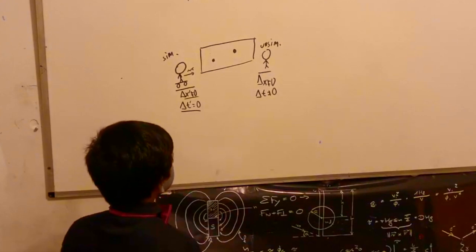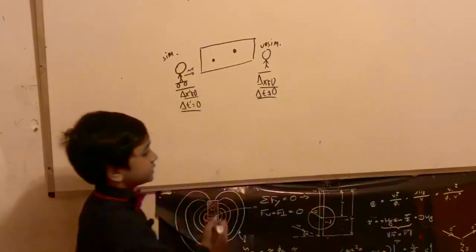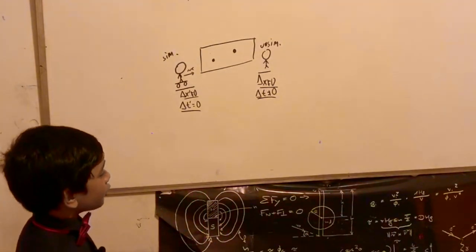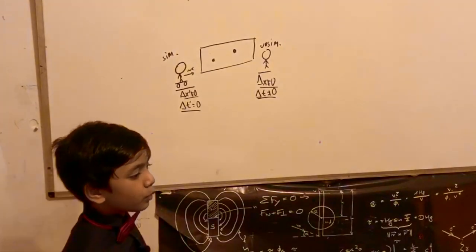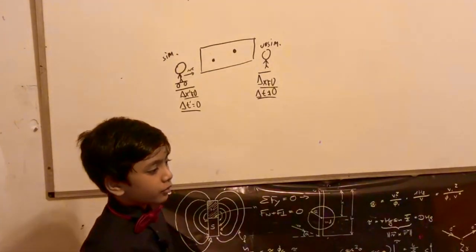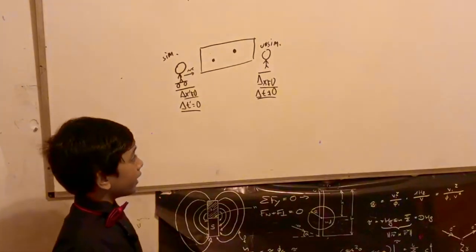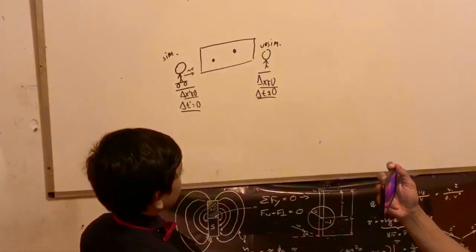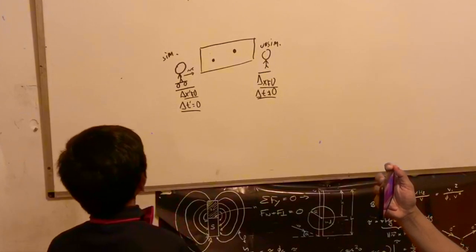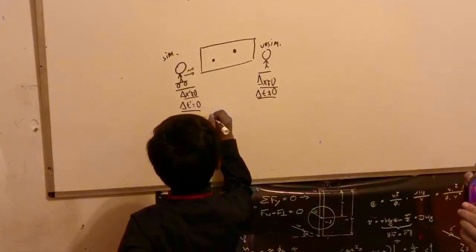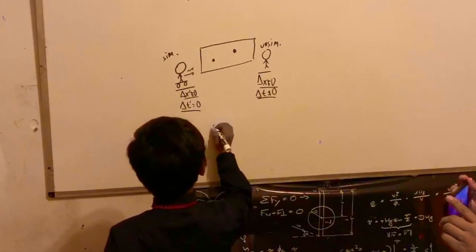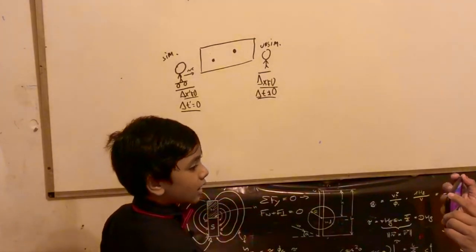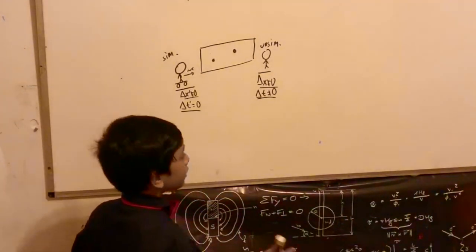The primed observer observed these observations and the unprimed observer observed these. We can use the Lorentz equations—two of Lorentz's most important equations that he formulated over the course of time—to improvise these statements and see how they're actually true and work in correspondence with each other.